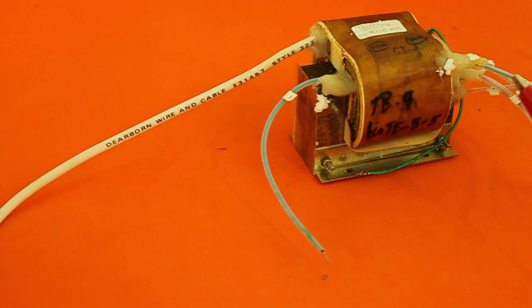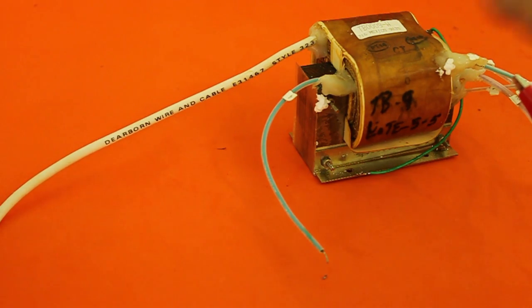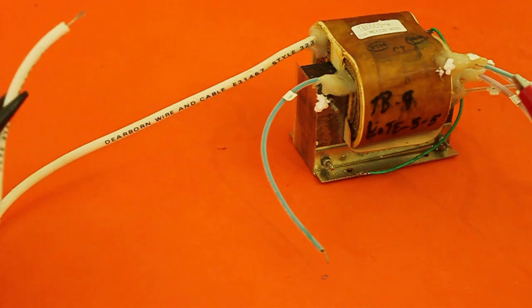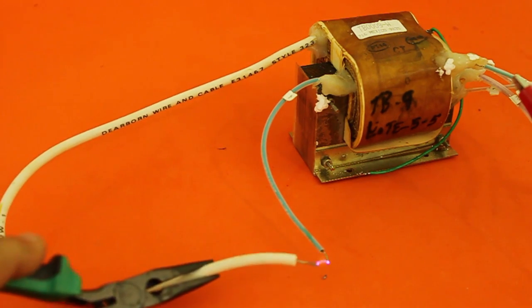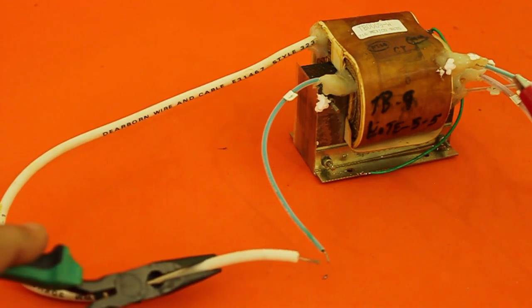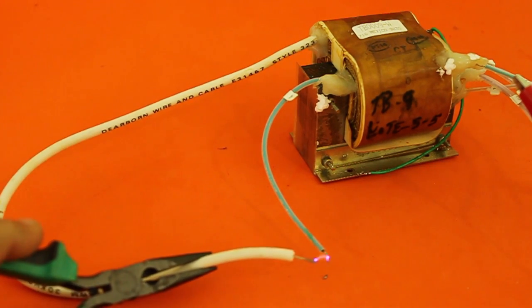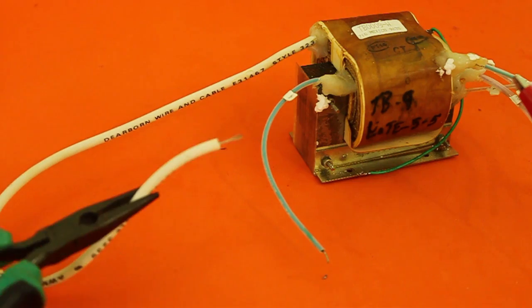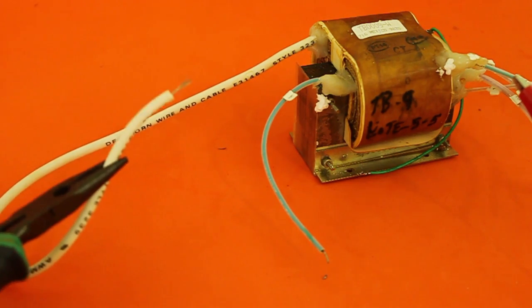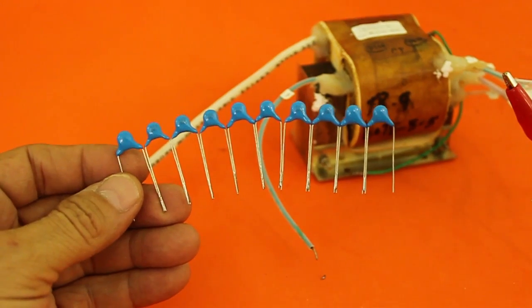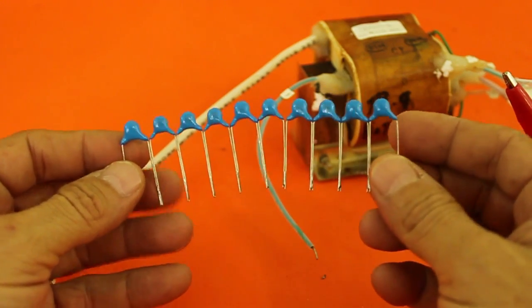An application of capacitive voltage dividers is to measure high voltage AC. For example, this transformer generates an output of approximately 5 to 10,000 volts AC. But let's use a capacitive voltage divider to measure it properly.